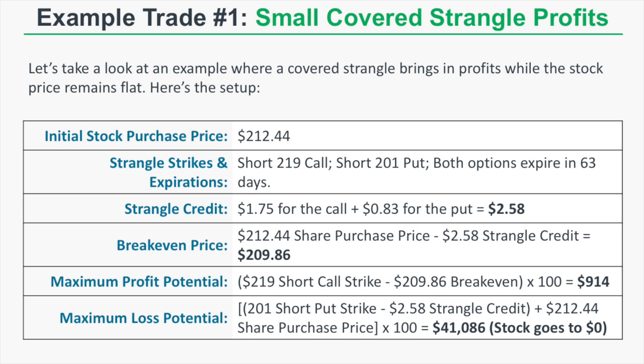The maximum loss potential combines the max loss on the long stock and the short put. The 201 short put strike minus the $2.58 strangle credit plus the $212.44 share purchase price, times 100, gives a maximum loss of $41,086 — but this only occurs if the stock falls to $0.